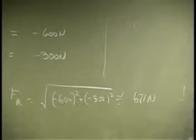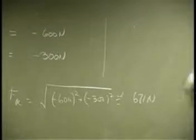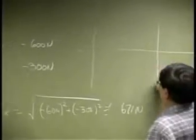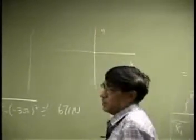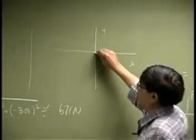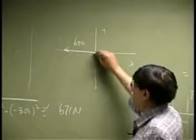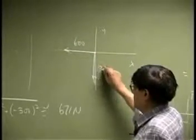Then the angle theta, we draw these components. This is X, this is Y. Then the X component will be like this, 600. Y component will be like this, 300.